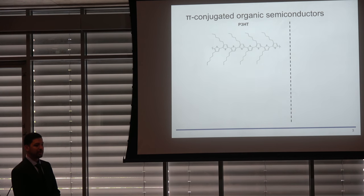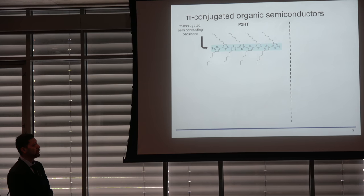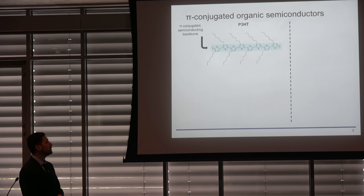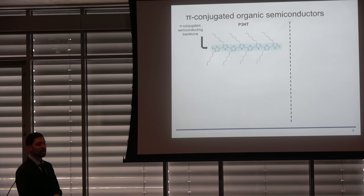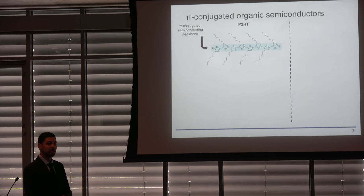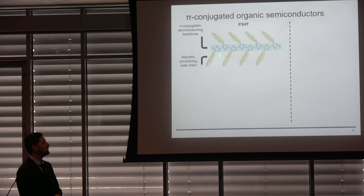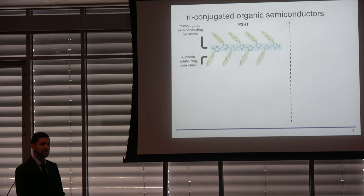What makes organic semiconductors conducting is their pi-conjugated backbone, which has an alternation of single and double bonds along the length of the backbone. This allows electrons in the pi orbitals to delocalize across the length of the molecule and allows for charge transport. To make these materials soluble, we typically attach aliphatic side chains to the backbone core. The example I'm showing here is P3HT, the workhorse material in the literature, well-characterized in terms of most of its properties.